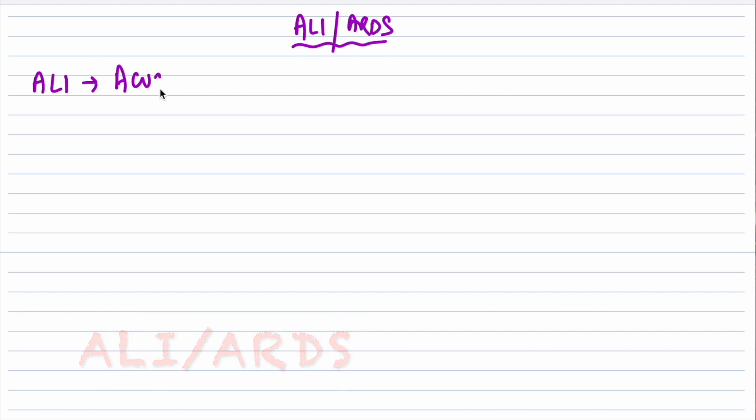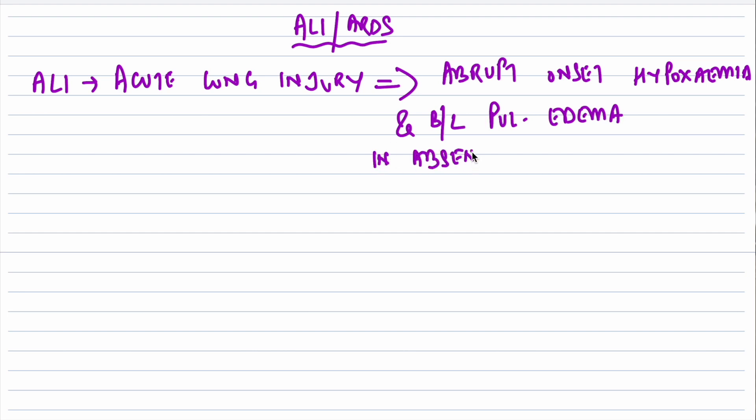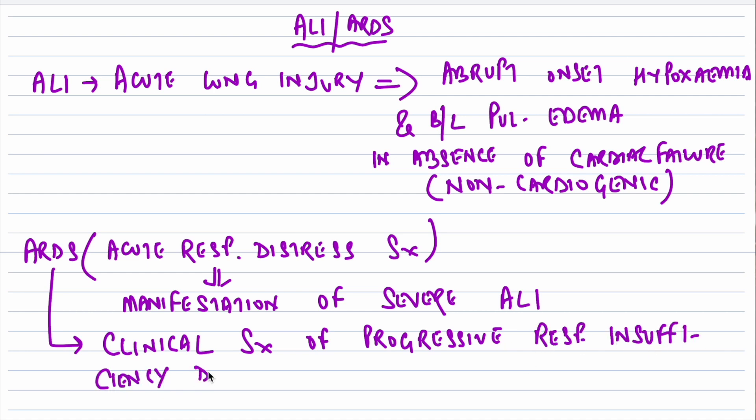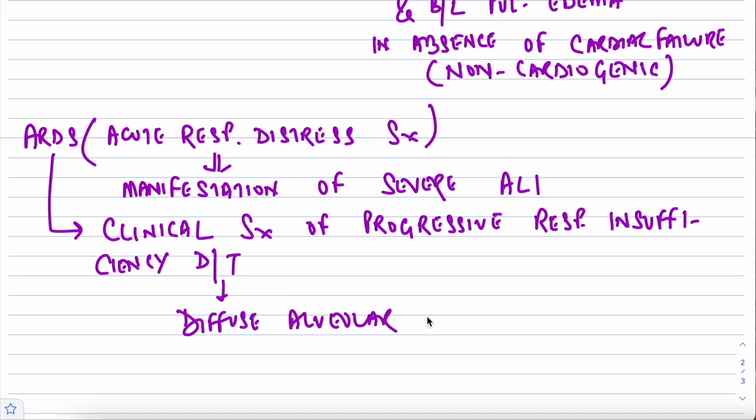Acute lung injury is characterized by the abrupt onset of hypoxemia and bilateral pulmonary edema in the absence of cardiac failure—it is a non-cardiogenic type of pulmonary edema. Acute respiratory distress syndrome (ARDS) is a manifestation of severe acute lung injury. ARDS is a clinical syndrome of progressive respiratory insufficiency due to diffuse alveolar damage in the setting of sepsis, severe trauma, or diffuse pulmonary infection.